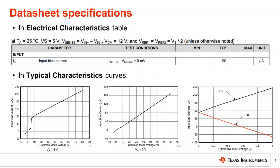The graph on the left shows the relationship of IB versus input common mode voltage when supply voltage VS equals 5 volts. The graph in the middle shows the relationship of IB versus input common mode voltage when supply voltage VS equals 80 volts. The graph on the right shows the relationship of IB versus input differential voltage.